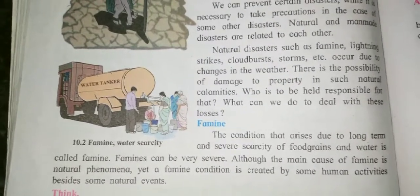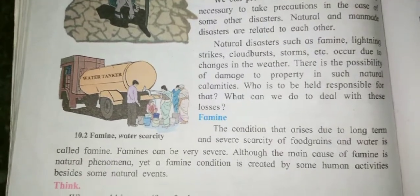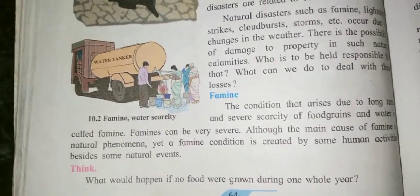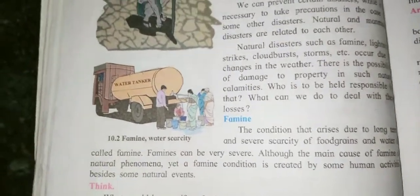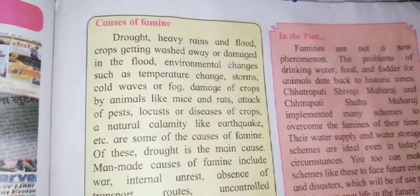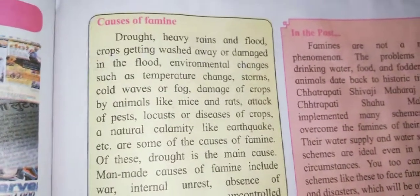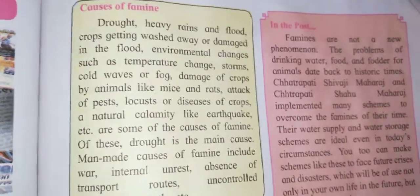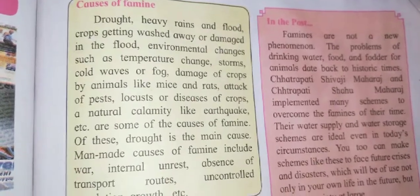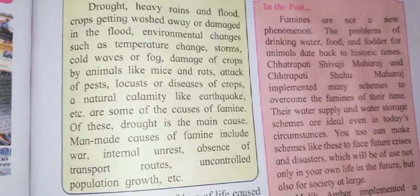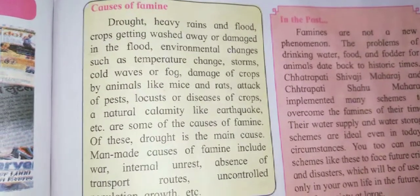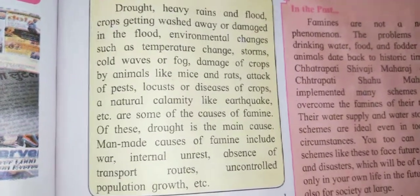A famine condition is created by some human activities besides natural events. You have to think about what will happen if no food were grown during one whole year. The natural causes of famine include drought, earthquake, and others. Of these, drought is the main cause.